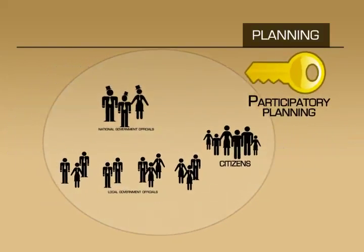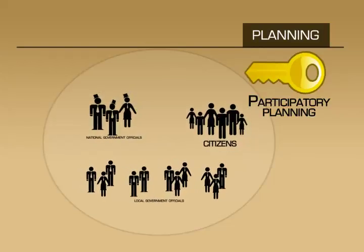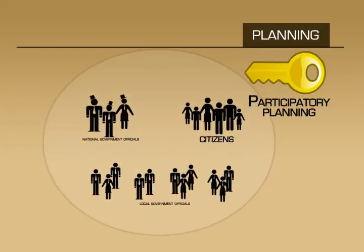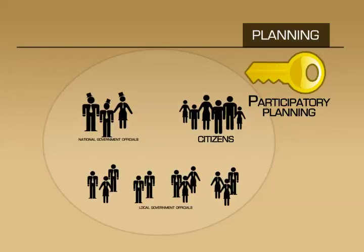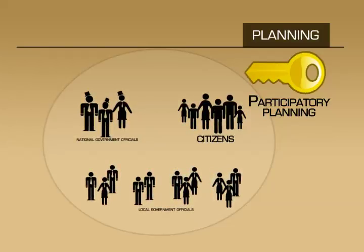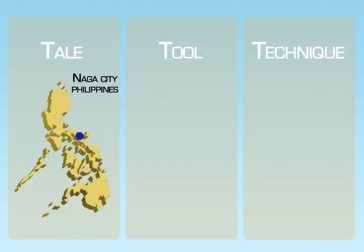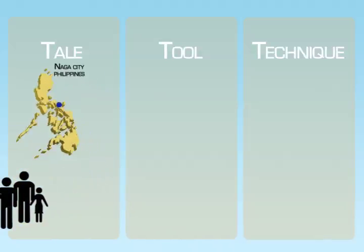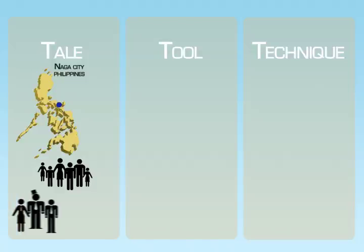Participatory planning is becoming an increasingly effective way to mitigate these vulnerabilities. Participatory planning allows stakeholders to directly engage with officials in identifying priorities for spending. In Naga City, Philippines, participatory development planning was institutionalized at the city level, enabling citizens to directly influence development planning through regular meetings with the city government.